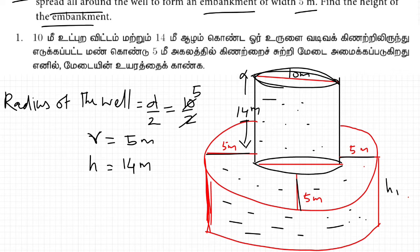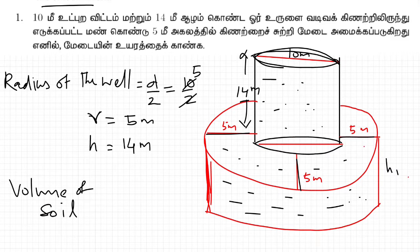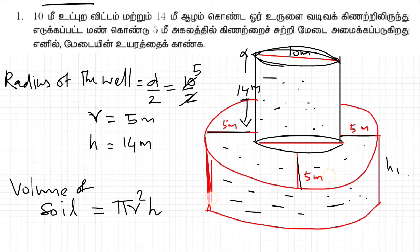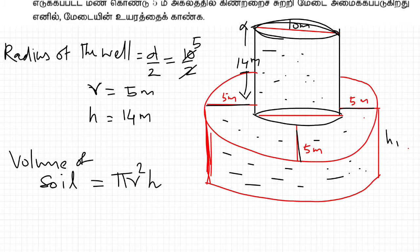Volume of soil dug out equals volume of cylinder. Volume of cylinder is π r² h.